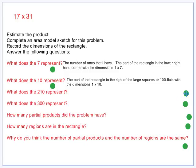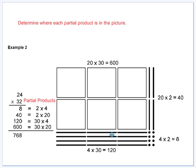What does the 210 represent? The part of the rectangle below the large squares with the dimensions 30 by 7. The other part of the 10 longs that I have. So I would think we would have 30 by 7 over here.